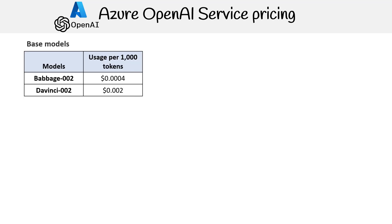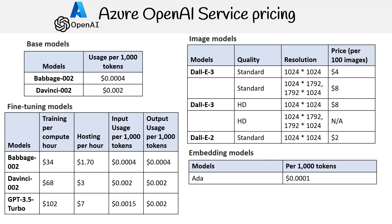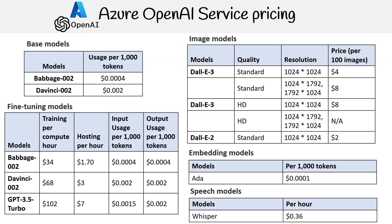There are other models such as the base models, fine-tuning models, image models, embedding models, and speech models. They all have their respective pricing, but we won't be going through each of them in a lot of detail. Essentially they are all on a pay-per-use pricing model — it could be pay per hour or pay per token and so on. The higher quality of the model, the more expensive it will likely be. So that's an overview of Azure OpenAI Service pricing.